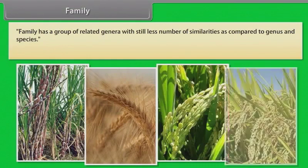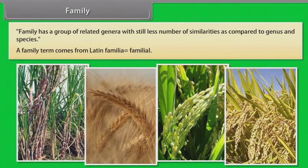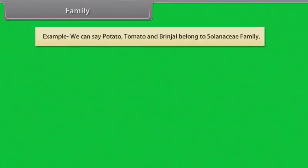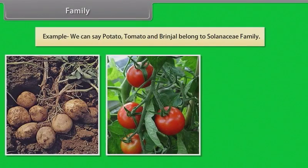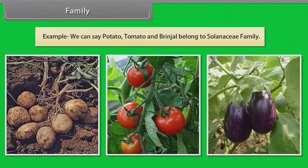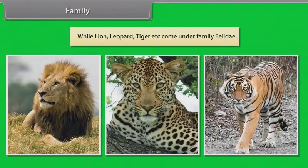Family has a group of related genera with still fewer similarities as compared to genus and species. The term family comes from Latin familia, meaning familial. For example, potato, tomato and brinjal belong to the Solanaceae family, while lion, leopard, tiger, etc. come under the family Felidae.